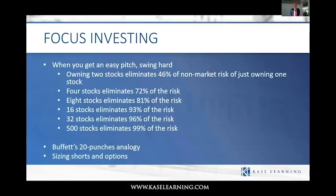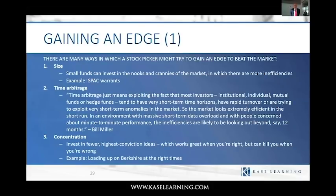There are different ways to get an edge in the market. If you can't answer what your edge is over all the other smart people and the supercomputers out there, you're in trouble. Number one is just being small — being able to poke around the nooks and crannies of the market. Warren Buffett has said he could compound at 50% a year with a million dollars under management but couldn't do it with 10 million.